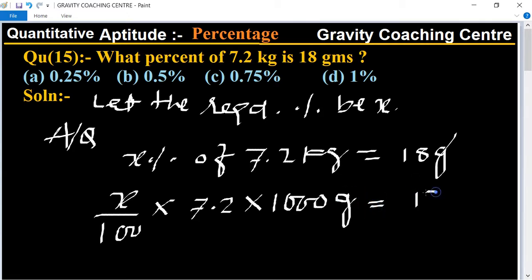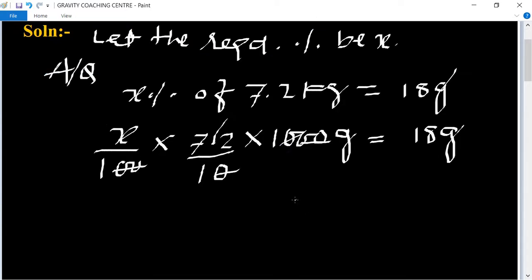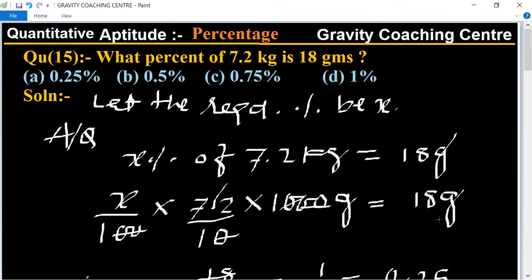Equal to 18 grams. The decimal point will cancel, the zeros cancel. Therefore x equals 18 upon 72. 18 goes into 72 four times, so 1 upon 4 means 0.25 percent.